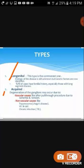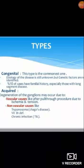The second type is acquired, where degeneration of ganglionic cells may occur. It has two sub-types: vascular causes and non-vascular causes. For vascular causes: after a pull-through procedure, complications like ischemia can occur. Pull-through procedure means the removal of the abnormal segment of the bowel — the area where nerves are absent is removed and the normal bowel is connected to the anus (anastomosis). If a complication occurs during this procedure, acquired Hirschsprung's disease may result.